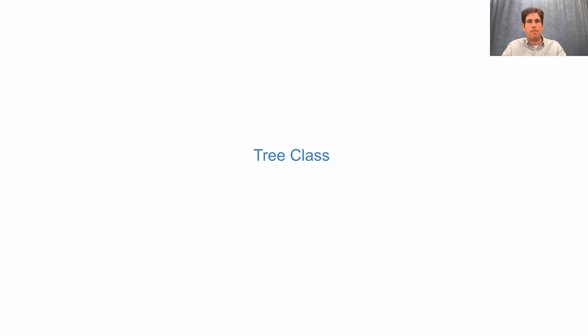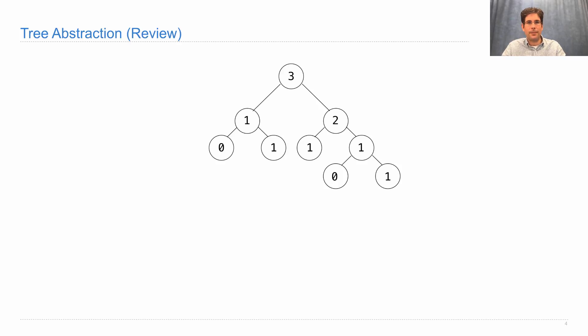We previously represented trees using data abstraction. Now we will write a class. The abstraction hasn't changed — a tree is a root label and a list of branches.